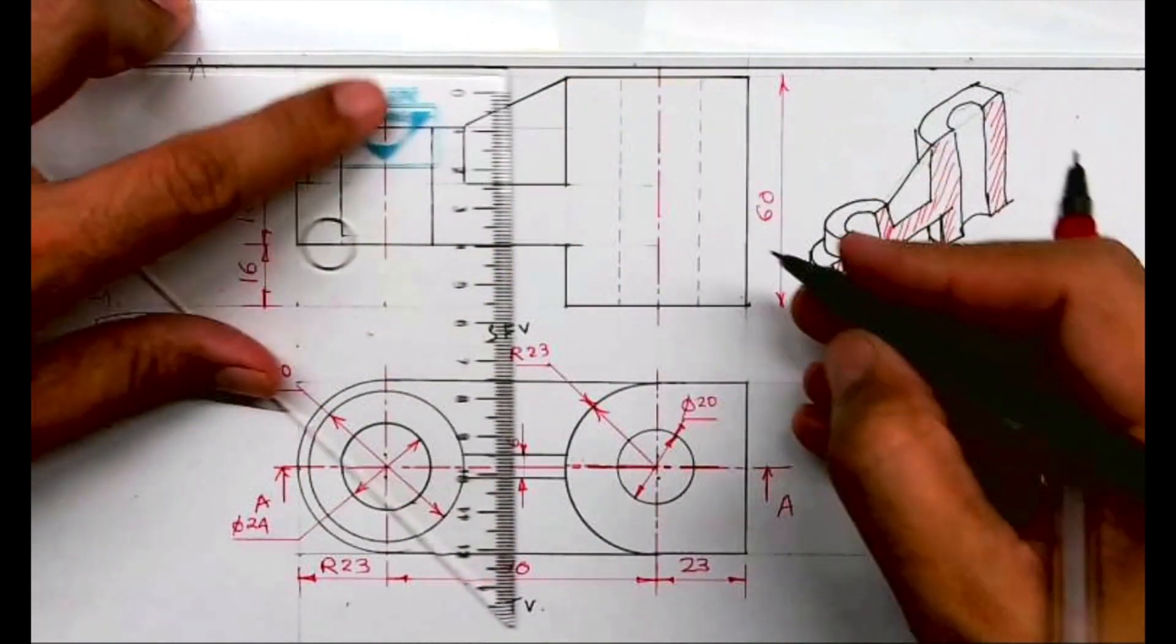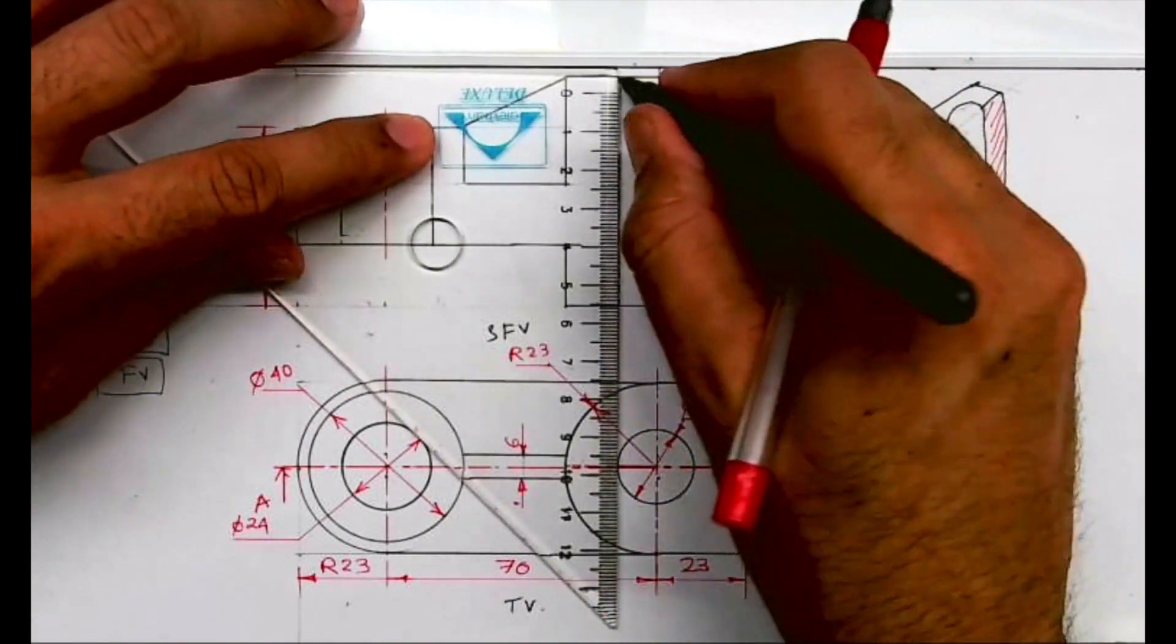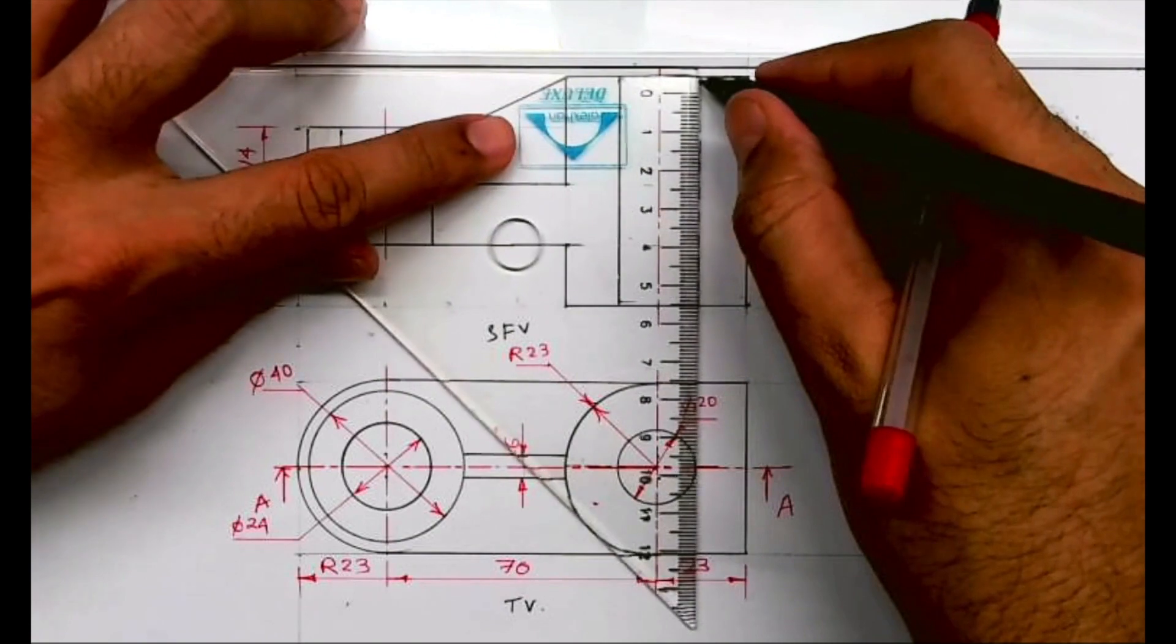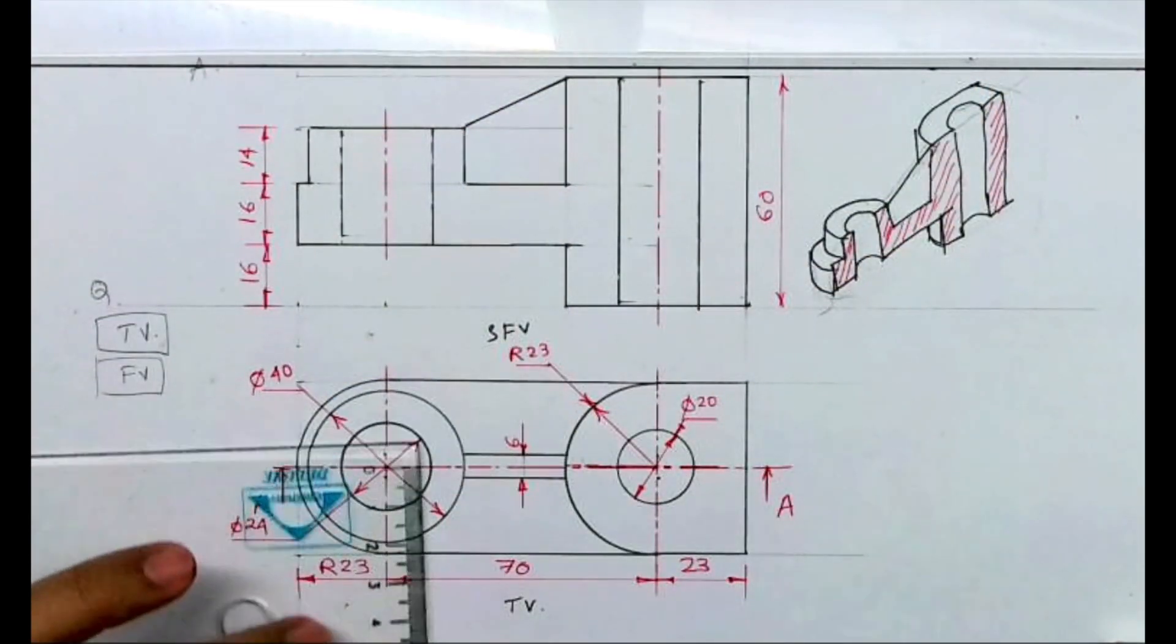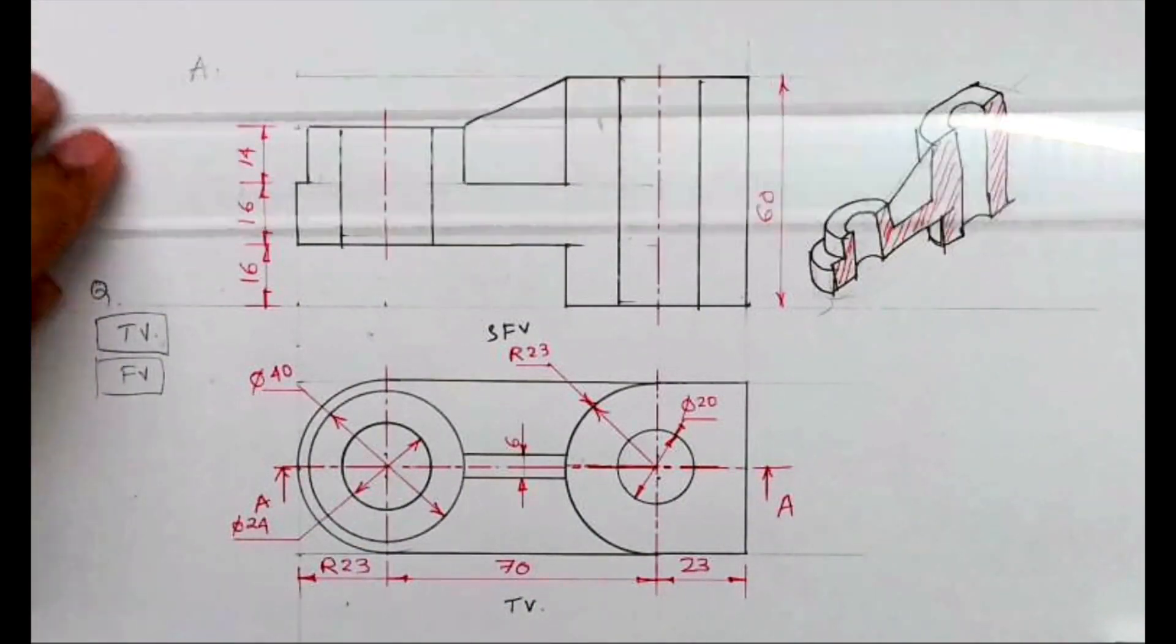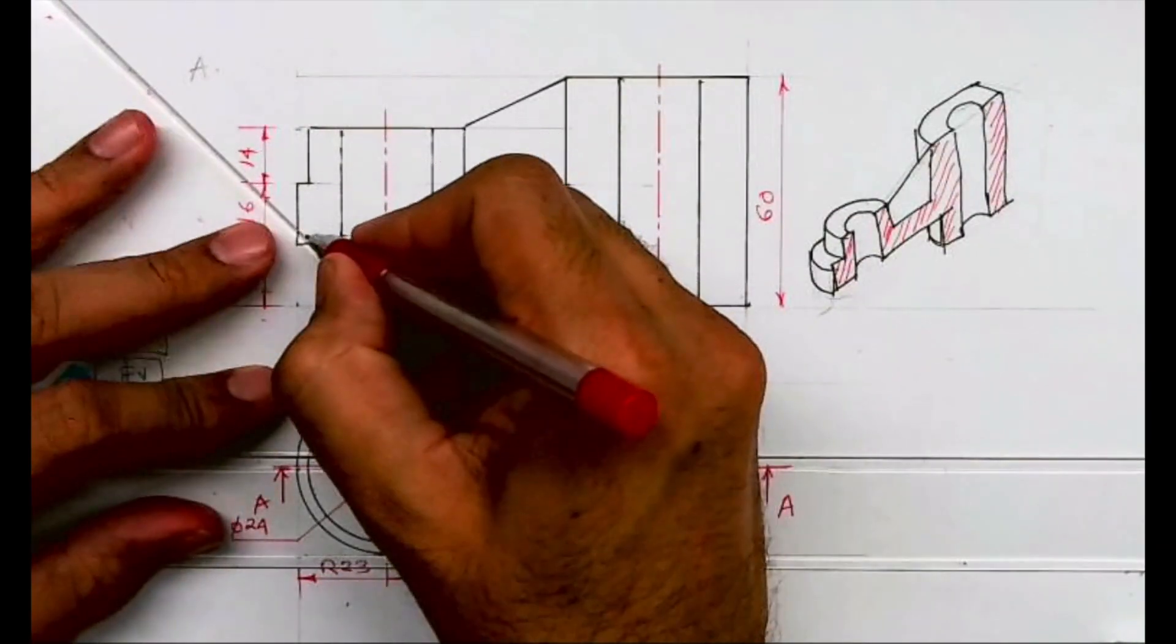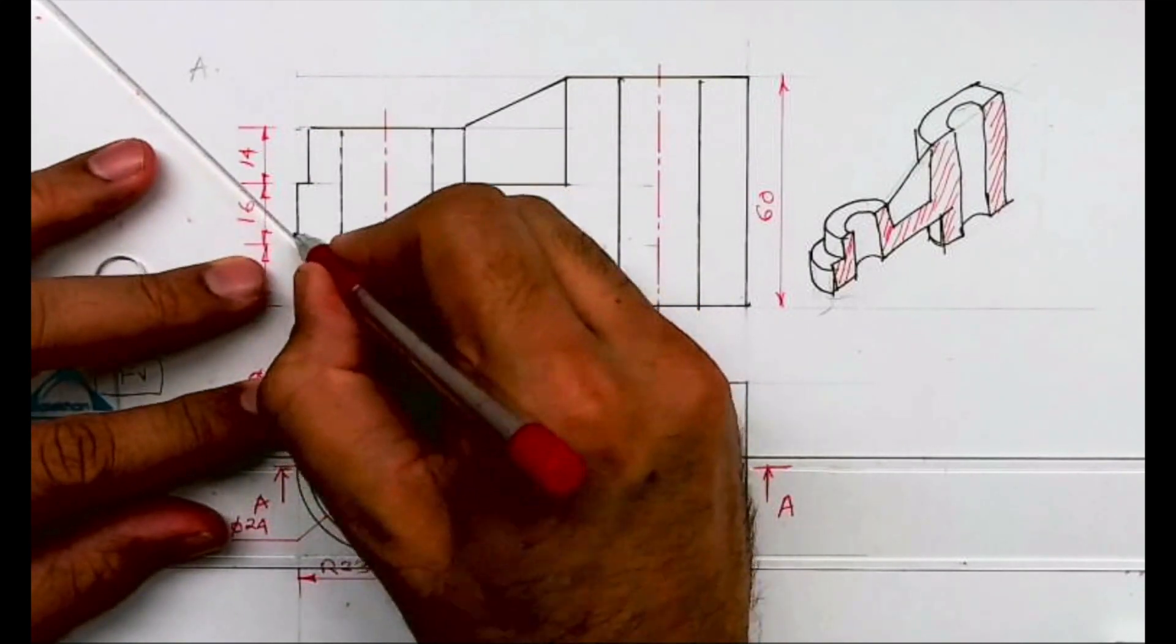This was in ICSC technical drawing application paper 2023, and it was very interesting. All these years they used to ask for side view as a missing view, but in this paper they have asked only sectional front view and top view. So we'll do this hatching.